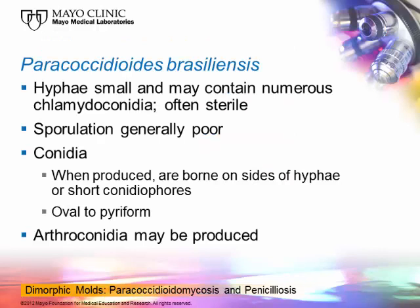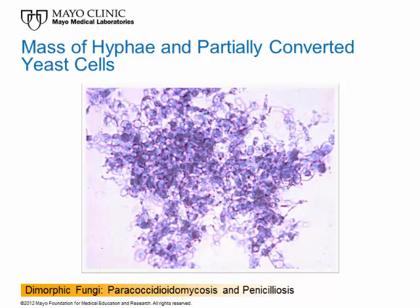With paracoccidioides, what do you look for to make an identification? It's not easy in the United States because we rarely see it, although patients do come here with that infection. The hyphae are generally small, and it may contain numerous chlamydoconidia. It is often sterile — sporulation doesn't happen very often. Conidia, when produced, are borne on the sides of hyphae or in short conidiophores, are oval to pear-shaped, and arthroconidia may be found. If you suspect this organism based on the patient's travel history, you will likely put the culture at 35–37 degrees centigrade to see if it will convert to the yeast form.